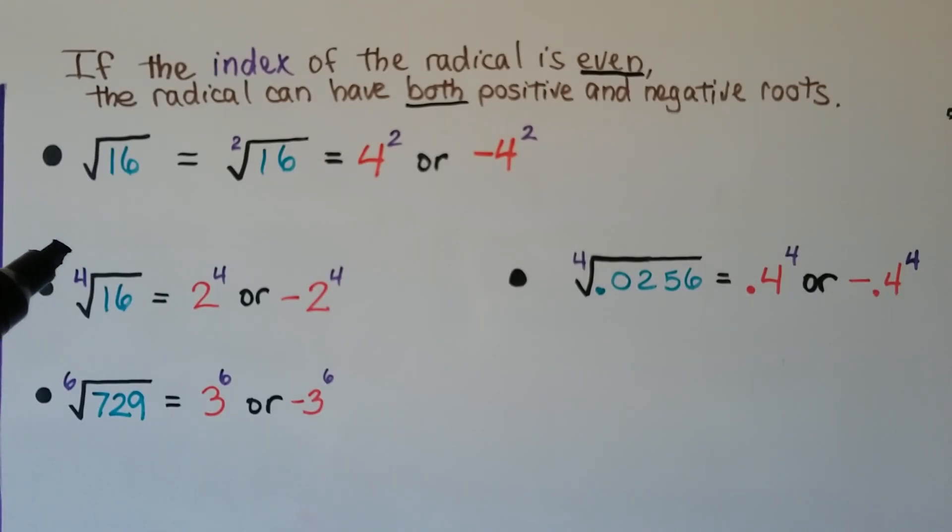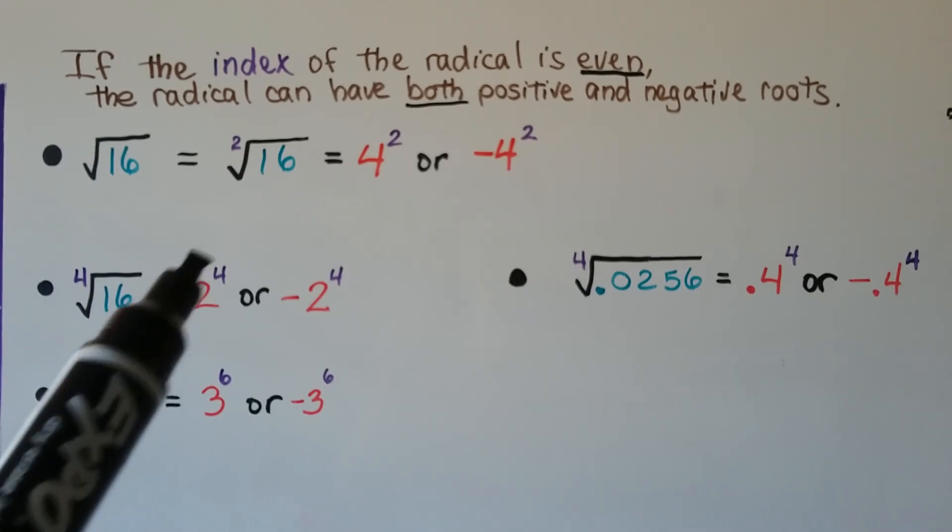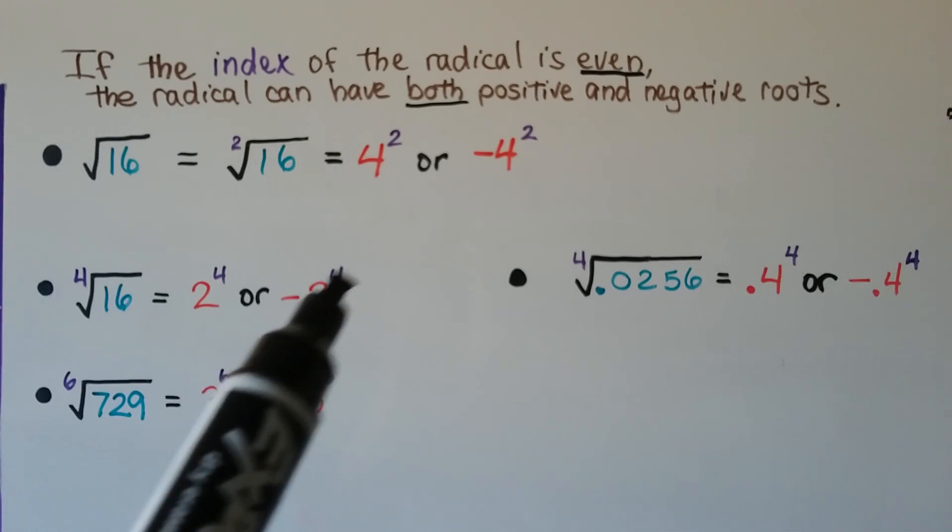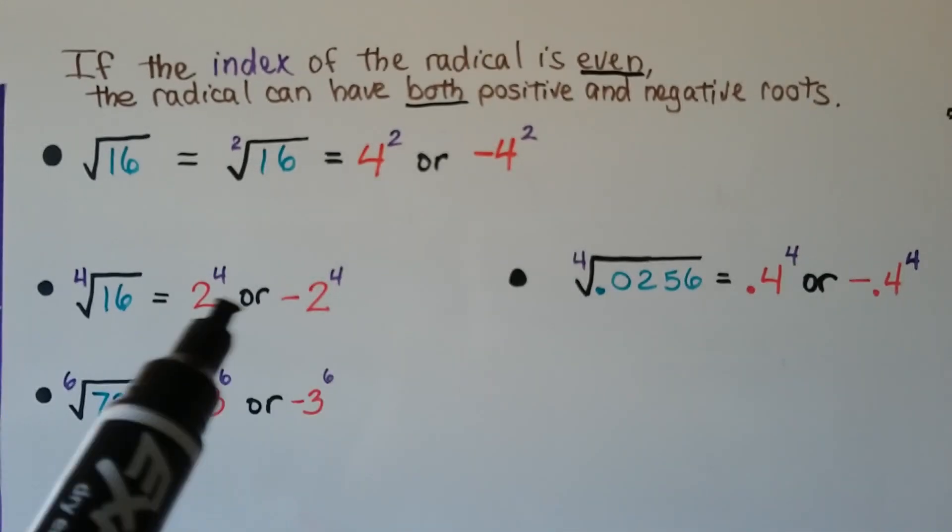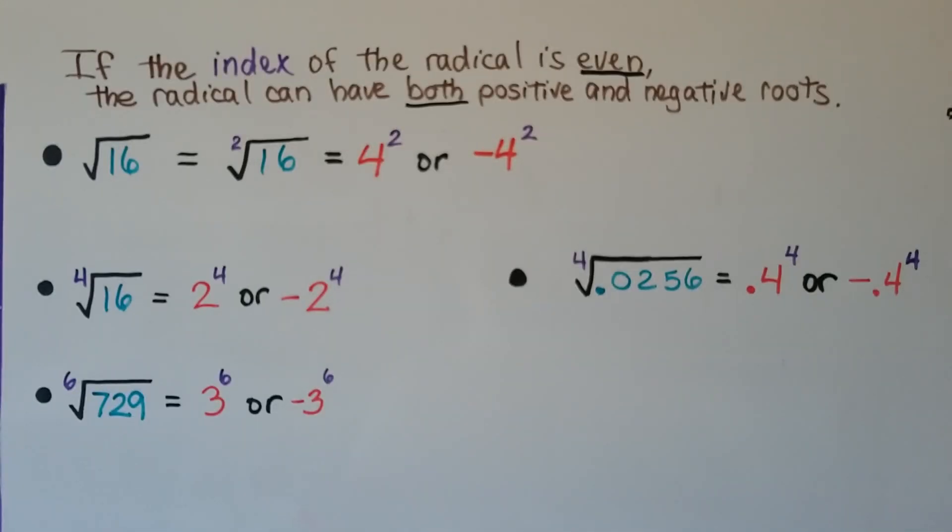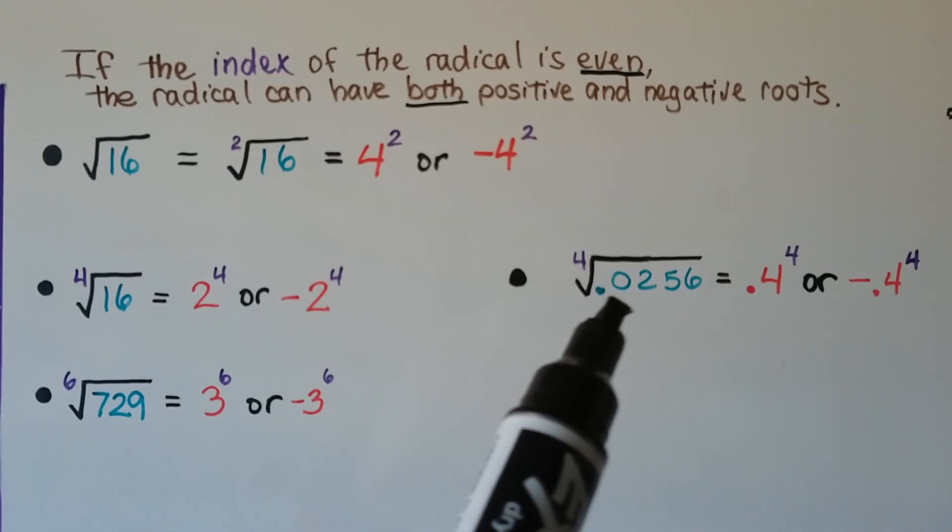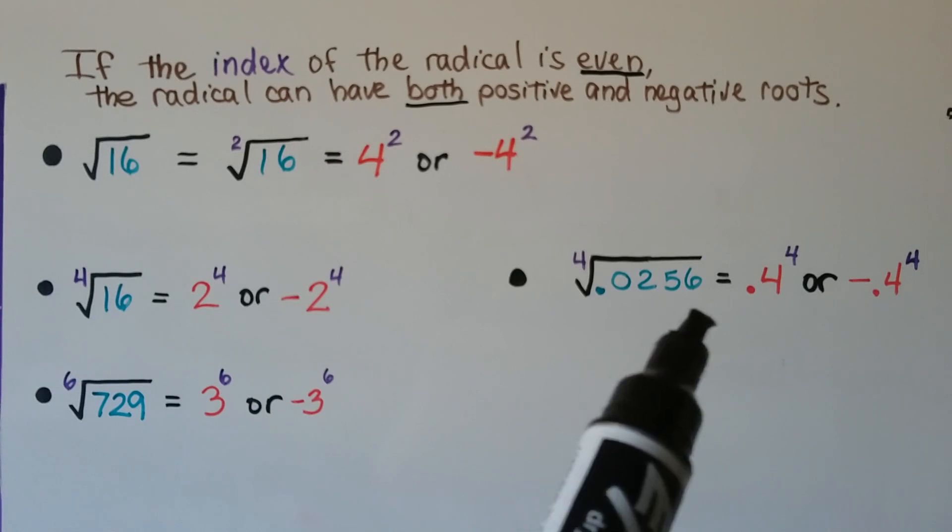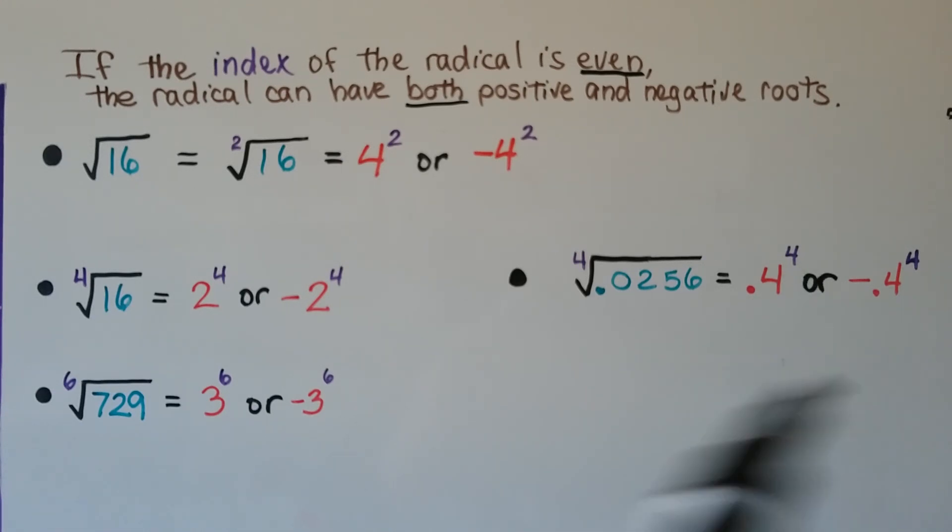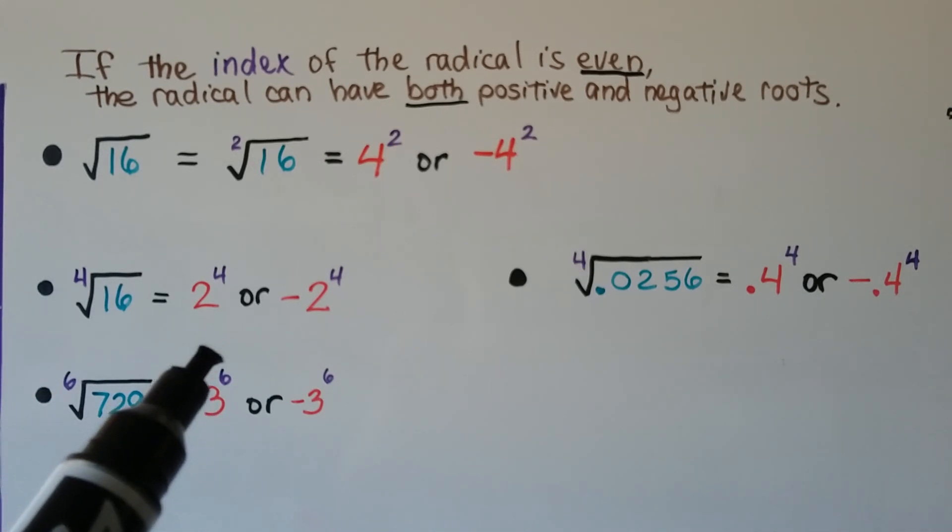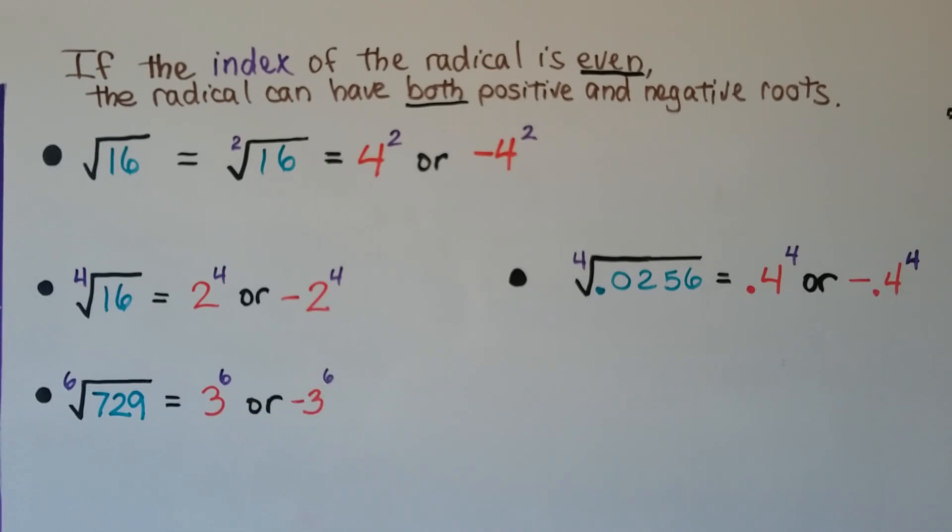Here we've got the fourth root of 16. We could have a positive 2 to the fourth power or a negative 2 to the fourth power, because when we multiply it all out it'll still be a positive 16. Here is the fourth root of 0.0256. We could have a positive 0.4 to the fourth power or a negative 0.4 to the fourth power. For the sixth root of 729, we could have 3 to the sixth power or a negative 3 to the sixth power.